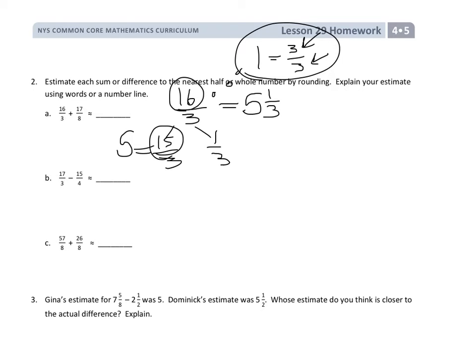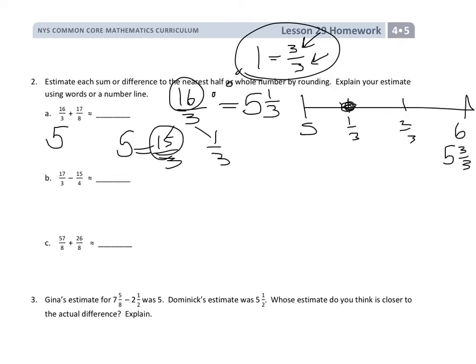To round that number, I put it on the number line. This number is between 5 and 6, broken up into thirds: one-third, two-thirds, and three-thirds is right at 6 whole. Here's 5 and one-third. I can determine that this is going to round closer to 5 whole.